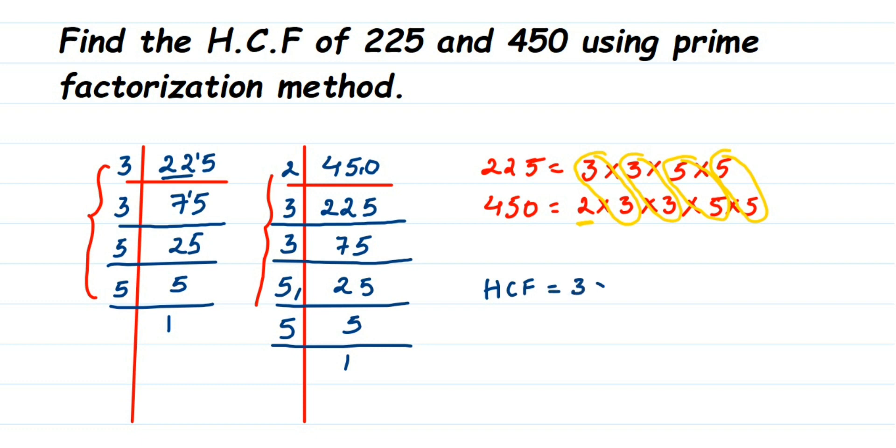Now HCF will be equal to - you just multiply from each pair, take one prime number from each and multiply. So it's 3 × 3 × 5 × 5. When you multiply, 3 times 3 is 9, 9 times 5 is 45, and 45 times 5 is 225. So HCF of these two numbers is 225.